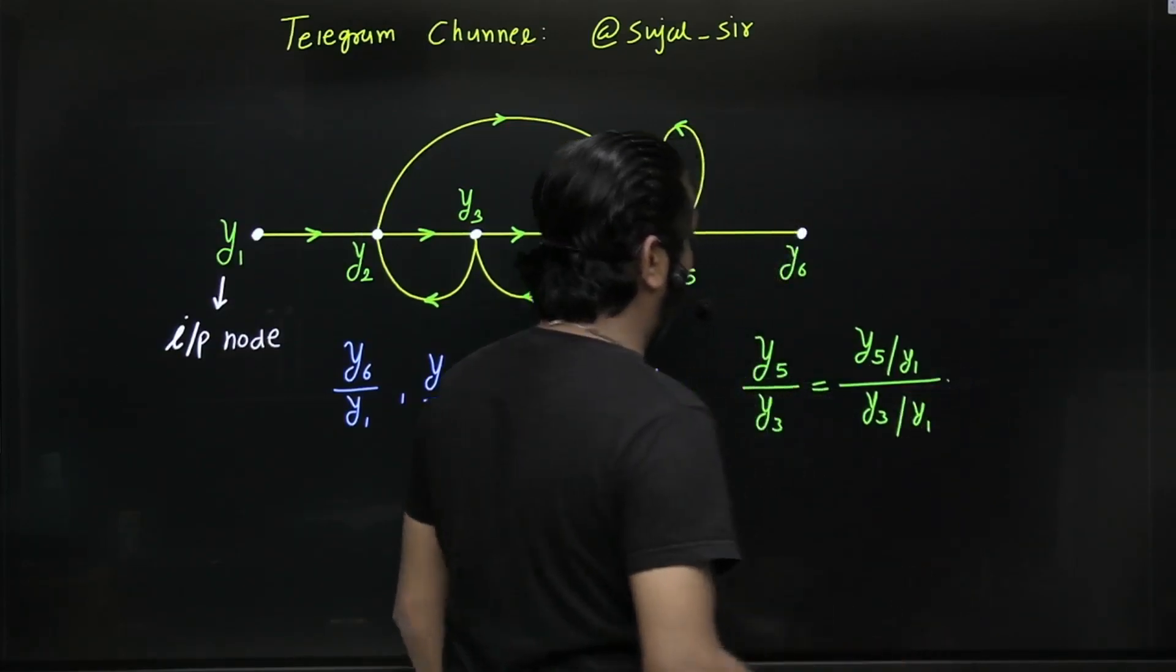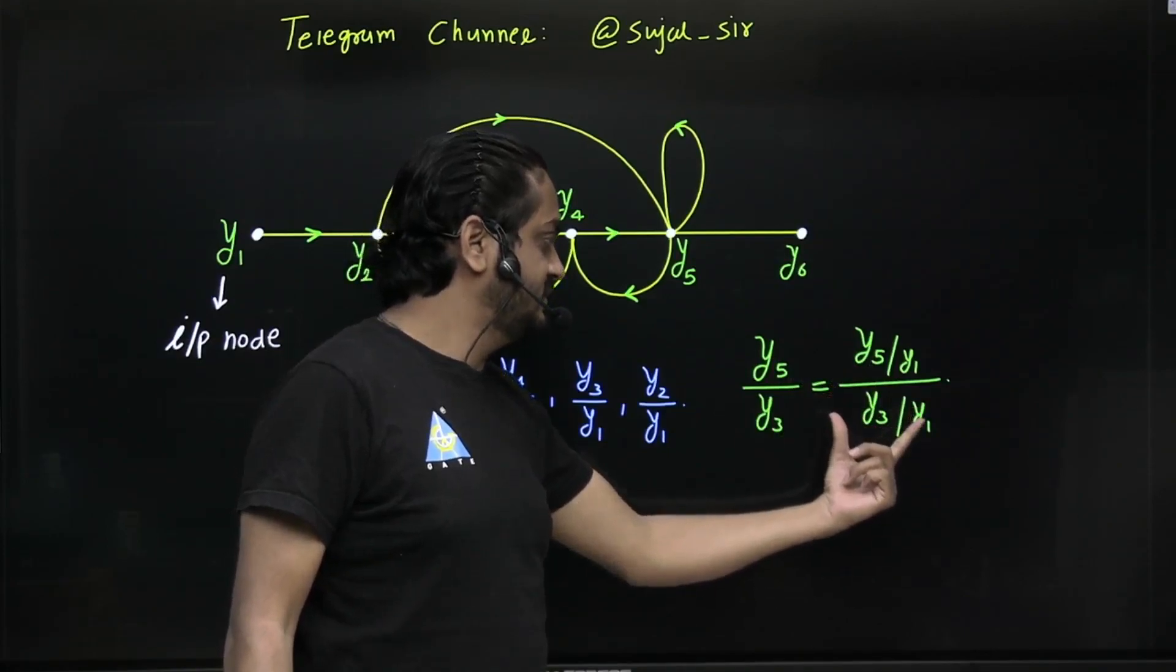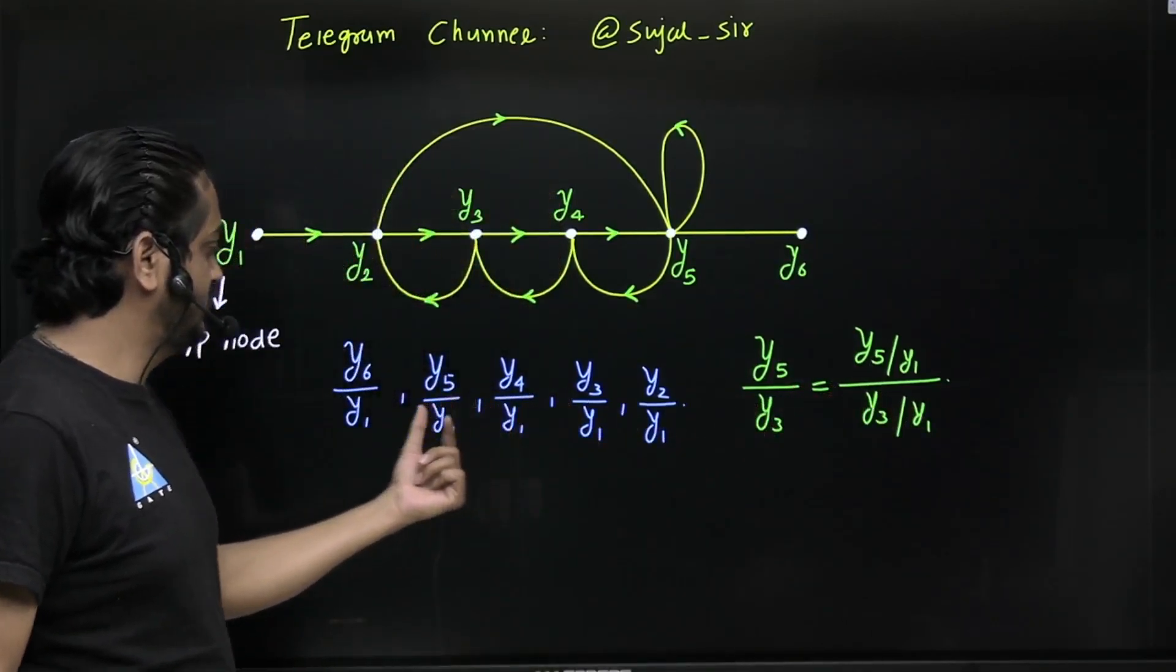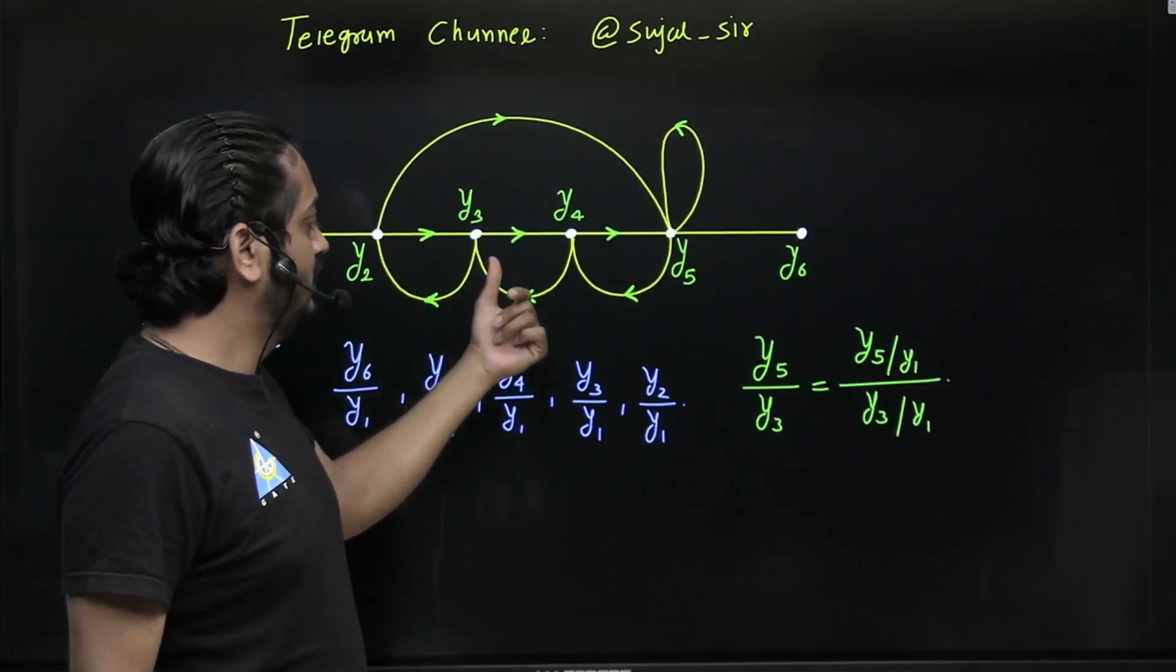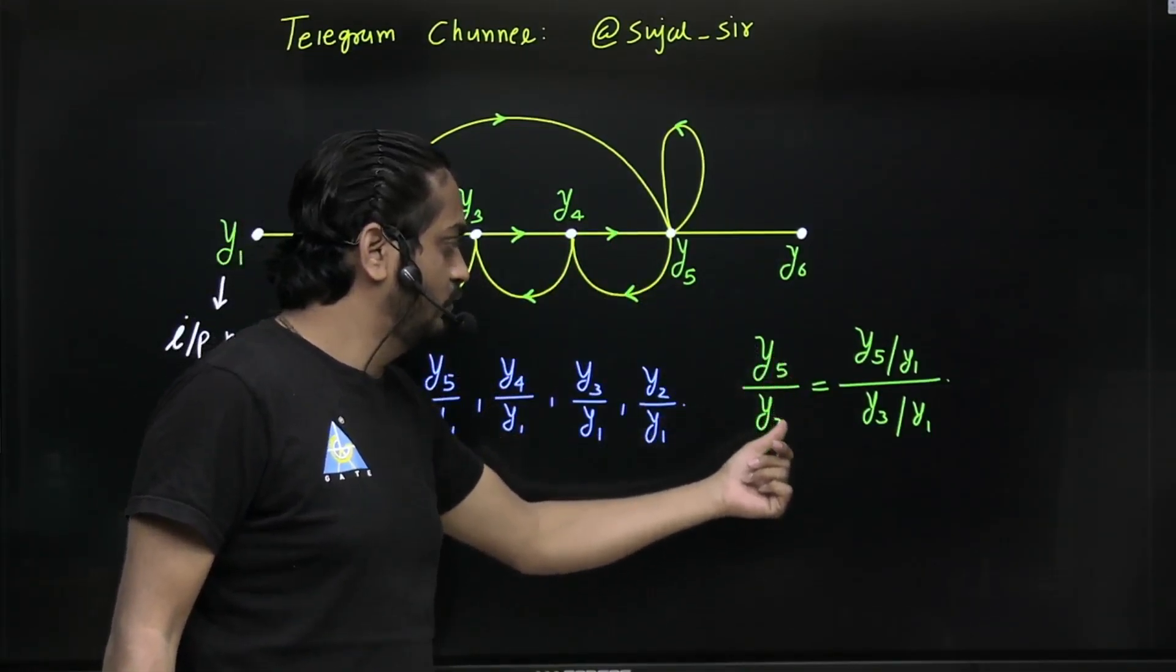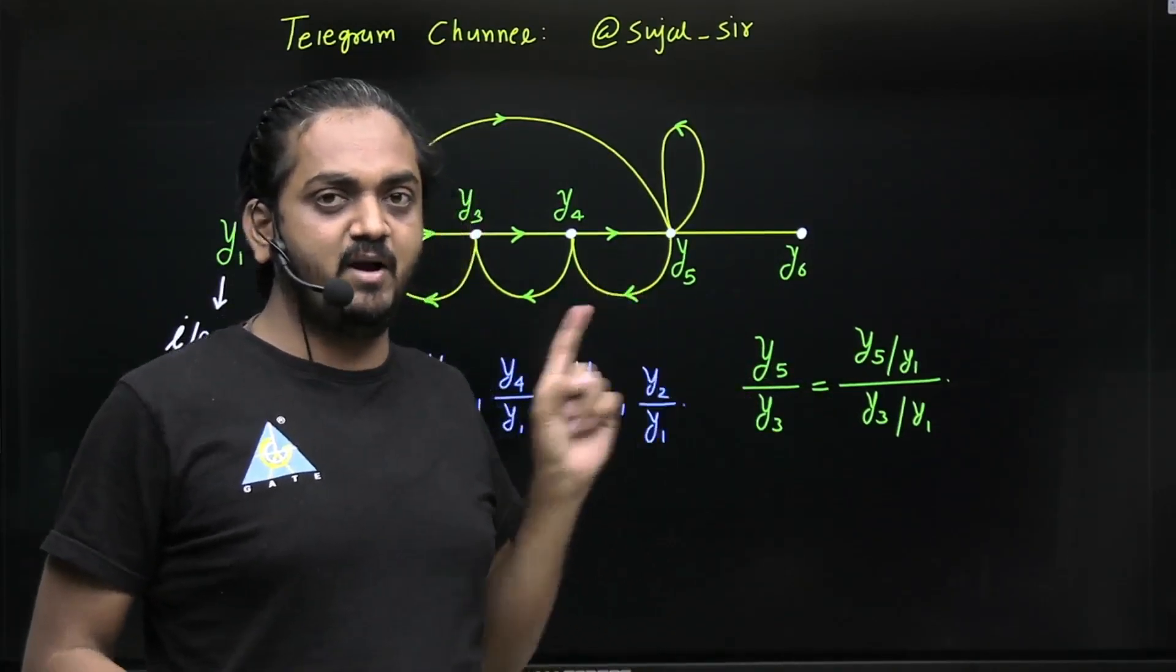And then you have to take ratio of these two. So remember this thing, message gain formula gives ratio with respect to input node only. It cannot give ratio between two middle nodes directly. Indirectly you can find. So remember this thing.